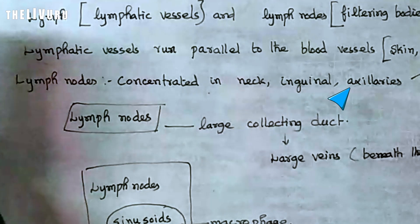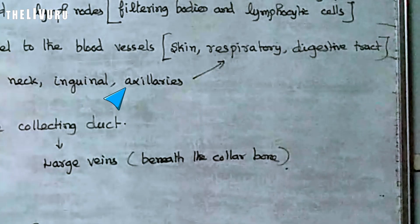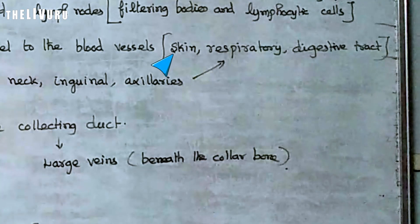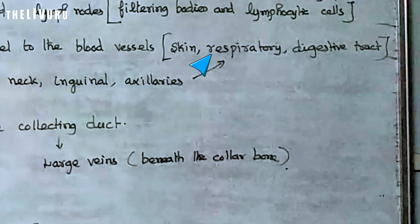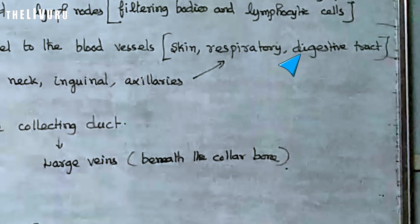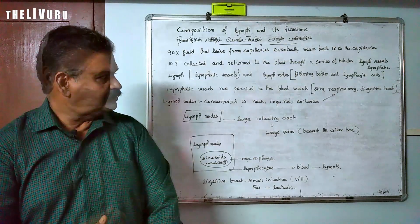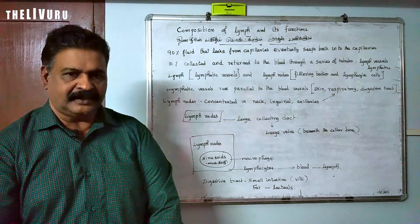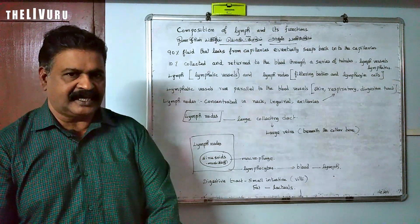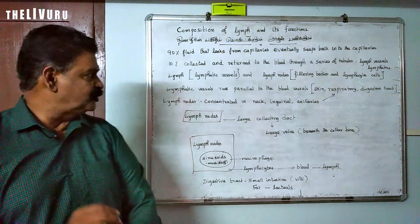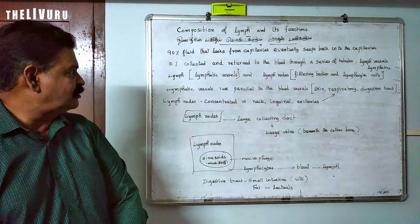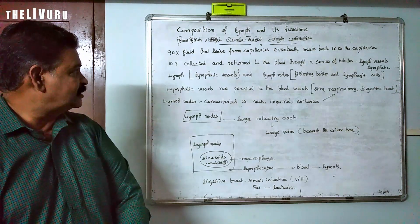Lymph nodes are found in the axillary region, the neck, the skin, the respiratory tract, and the digestive tract. These locations are the sites where lymph nodes are concentrated to filter lymph passing through the lymphatic system.